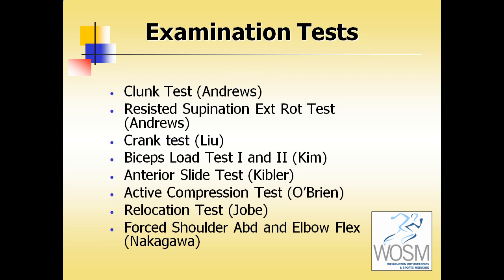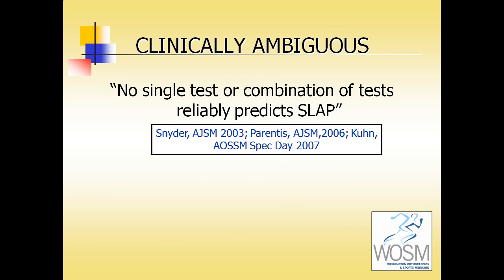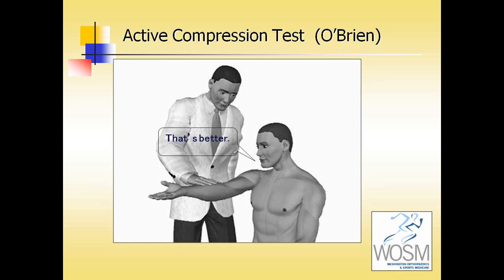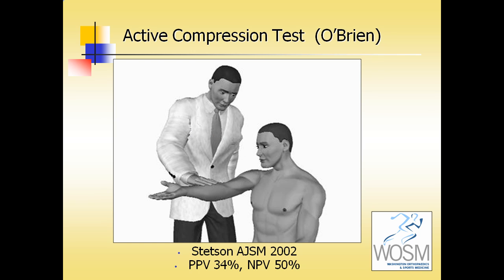A number of physical examination tests have been evaluated for their accuracy in detecting a SLAP lesion, but unfortunately no single test or combination has been able to reliably predict the presence of a SLAP lesion. In the most commonly known test — the active compression test described by O'Brien — the patient's arm is placed in flexion and adduction, the examiner pushes down while the patient resists, and if the pain is relieved when the forearm is supinated, this is indicative of a positive sign for a SLAP tear. Yet authors have demonstrated this has relatively low positive and negative predictive value, so even our most familiar tests are not reliably able to identify SLAP lesions.